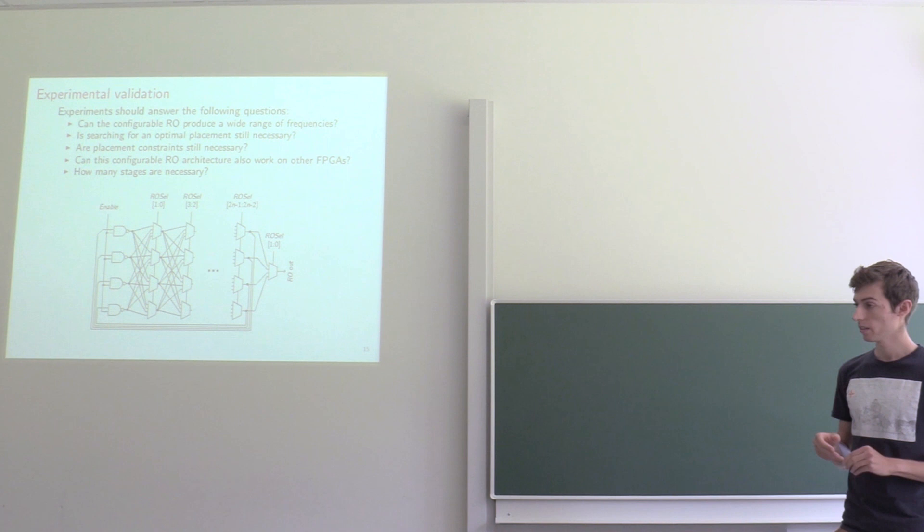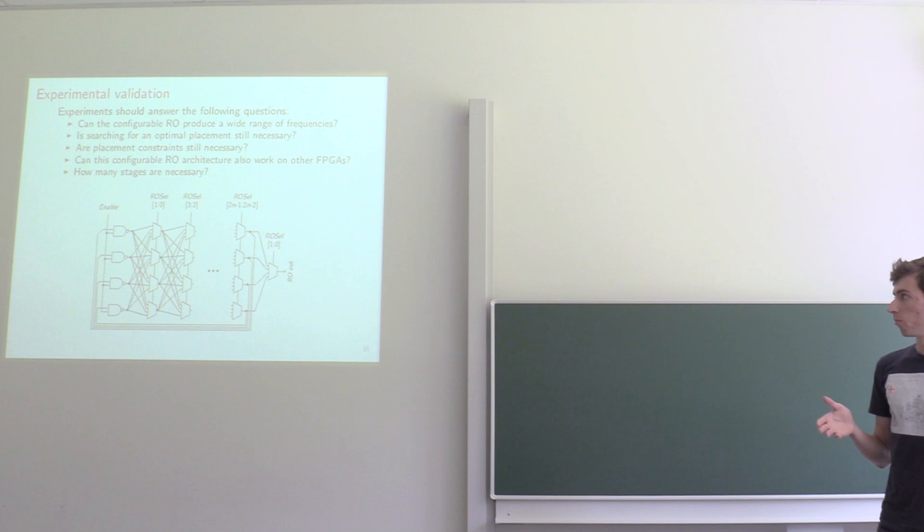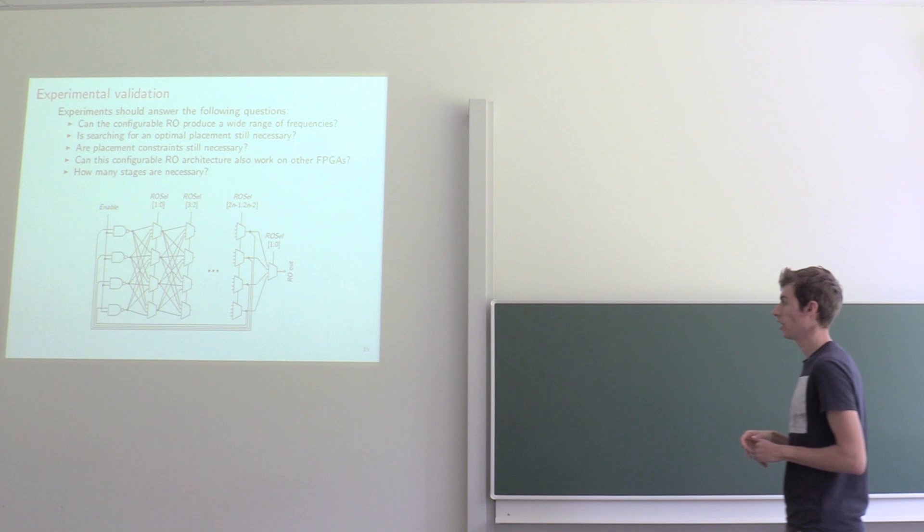Because in the past TRNG designs, for TRNG designs, relative routing was more than the exception. Because to increase matching, you would require symmetrical routing.